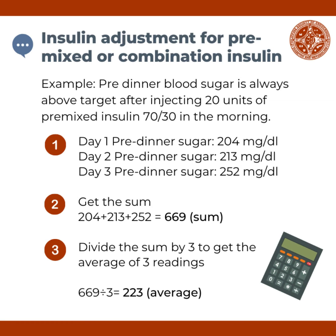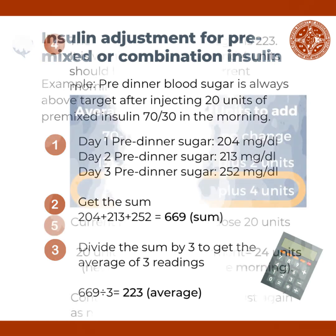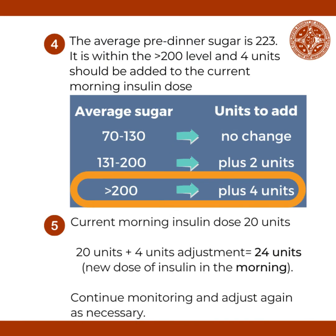Adding the values for three days: 204 plus 213 plus 252 gives a sum of 669. Dividing 669 by three days, the average blood sugar is 223 milligrams per deciliter. Based on the reference table, 223 milligrams per deciliter is above the 200 milligrams per deciliter level.